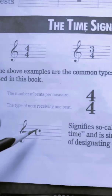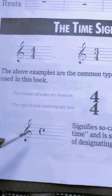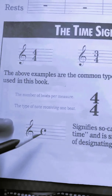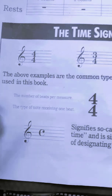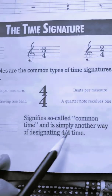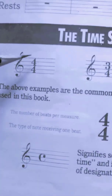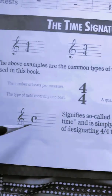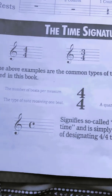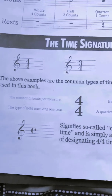If you encounter a symbol that looks like a C right in front of the treble clef sign, it signifies the so-called common time and is simply another way of designating four four time. So instead of writing four four, they just write C. C implies common time because four four is the most commonly used time signature in music.